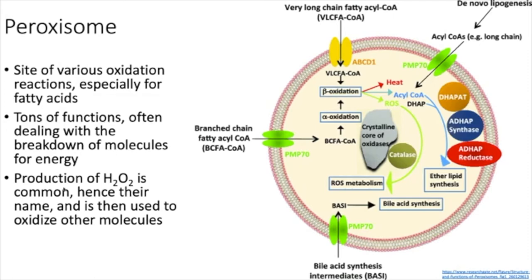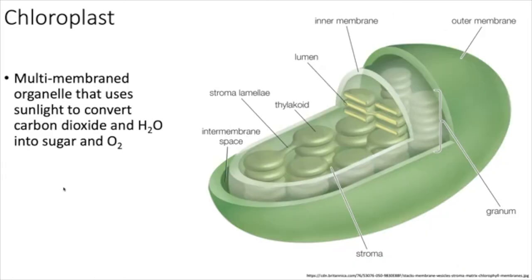Eukaryotes also have glycocalyx structures. The endothelial cells lining your blood vessels secrete a glycocalyx into the vessel lumen, which reduces the physical shear stress on those cells from blood pressure. If the glycocalyx is damaged — from atherosclerosis, aging, or smoking — it can increase shear stress, potentially rupturing the vessel. If that happens in your brain, that's a serious problem.